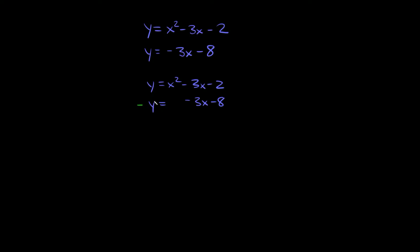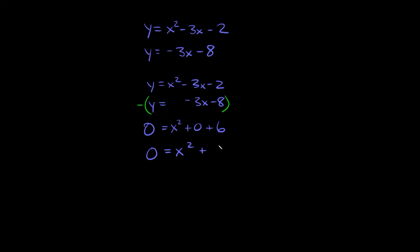So we're going to subtract this bottom equation from the top one. y minus y equals 0. Then x squared minus 0 is just x squared. Negative 3x minus negative 3x is the same as negative 3x plus 3x, which equals 0. And then negative 2 minus negative 8 — subtracting a negative is the same as adding — so negative 2 plus 8 equals positive 6. So we get 0 equals x squared plus 6.